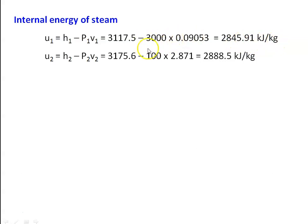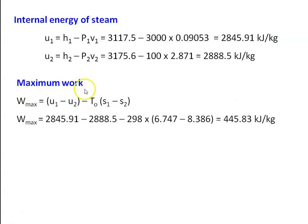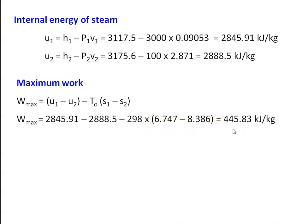U2 equal to H2 minus P2 V2, which is 3175.6 minus 100 into 2.871 equal to 2888.5 kilojoules per kilogram. Maximum work: W max equal to U1 minus U2 minus T0 into S1 minus S2, substituting values: 2845.91 minus 2888.5 minus 298 into 6.747 minus 8.386 equal to 445.83 kilojoules per kilogram.